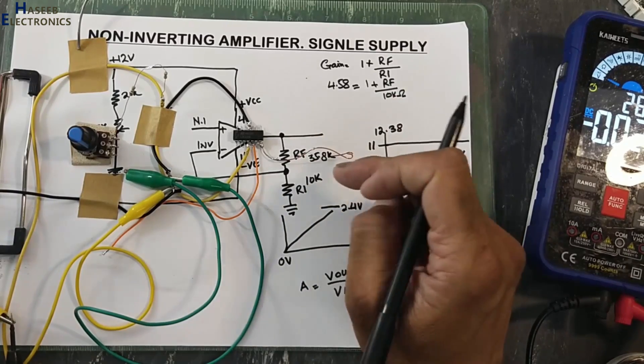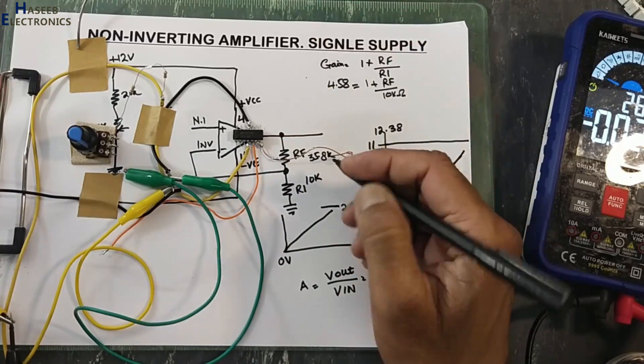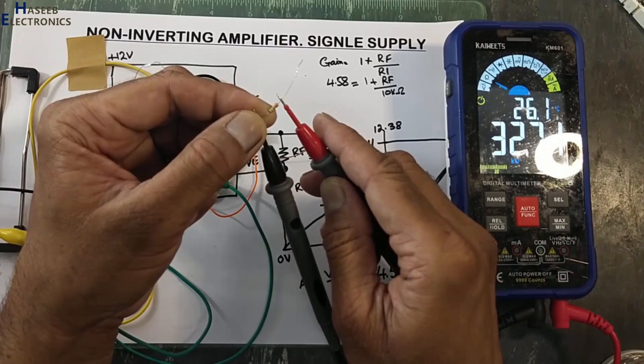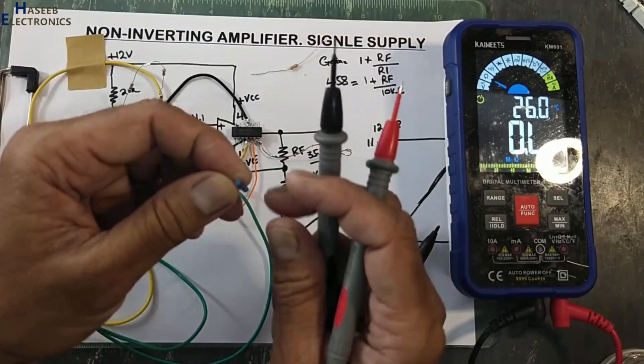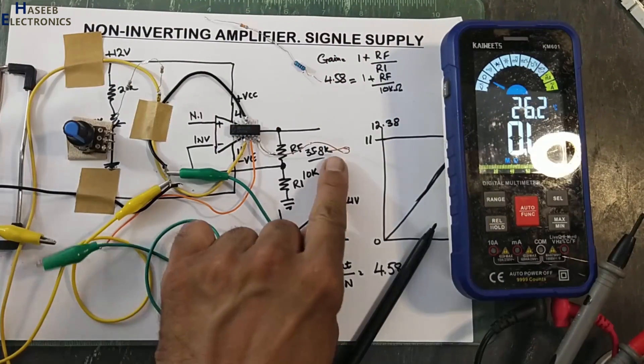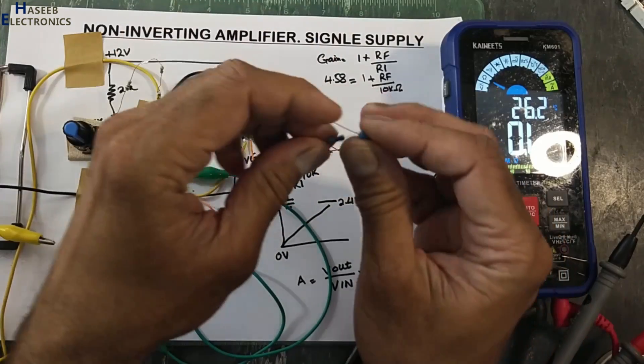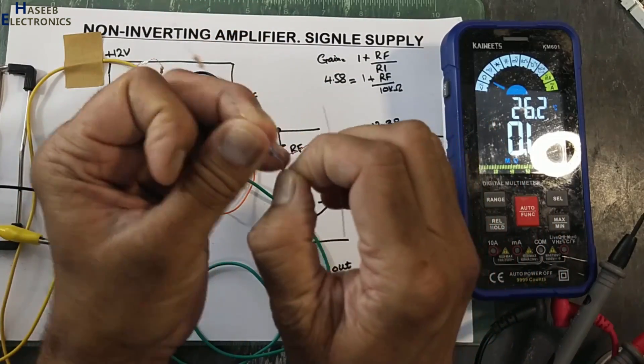It is 32.7k plus 1k to make 35.8 kilo ohms. I will use 33k and 2.1k resistors series.